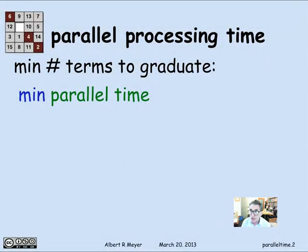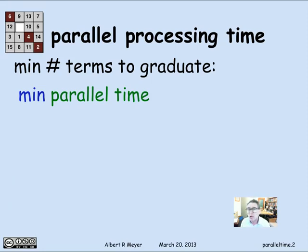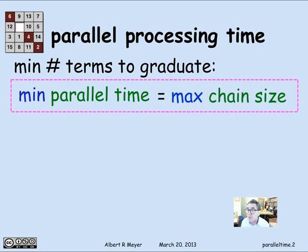We've already worked out some theory of that just from the example. Namely, if we look at the minimum number of terms to graduate, this corresponds to the minimum number of stages, or the minimum amount of time it takes to process a bunch of tasks, assuming you can do tasks in parallel — as many in parallel as you need — with no limit on the amount of parallelism allowed. In that case, the minimum parallel time for a bunch of constrained tasks is simply the maximum chain size in the constraint graph.